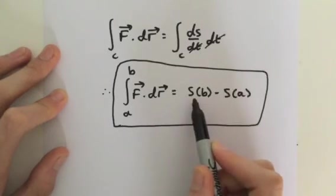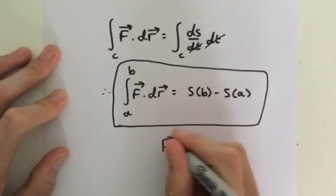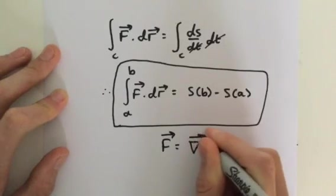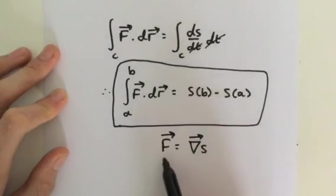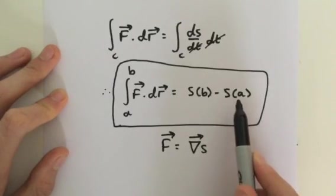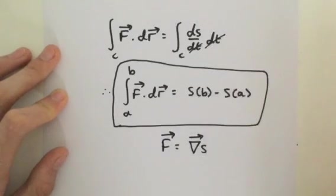It just depends on the scalar field. F is equal to del S, grad S. F is a conservative vector field. If that's the case, then we can see that the line integral only depends on the two endpoints, not the curve that is connecting the endpoints. And that is path independence because the line integral does not depend on the curve. I'll see you in the next video.